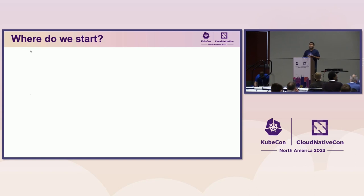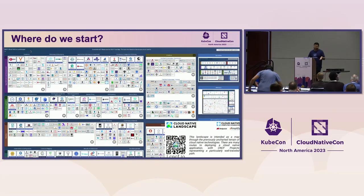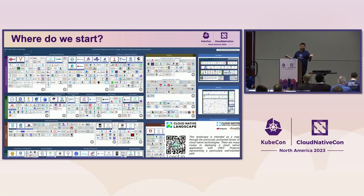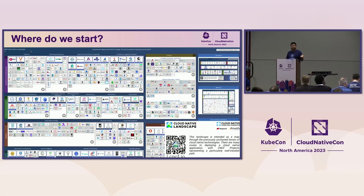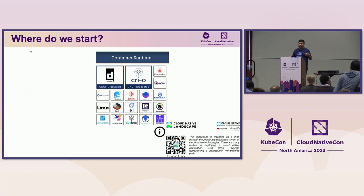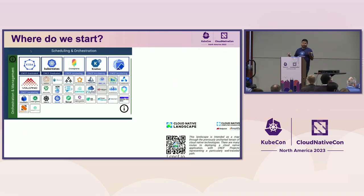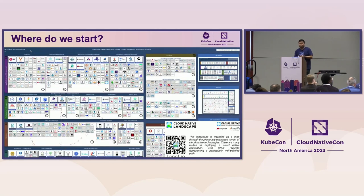When I first started, I had a hard time knowing where to start in my cloud native journey. Everyone has seen the cloud native landscape - it is mind-boggling and hard to determine where to begin. Even with specific sections like container runtime, there are many projects to choose from. Same with scheduling and orchestration: Crossplane, Kubernetes, KEDA - so many options. So where do we start?